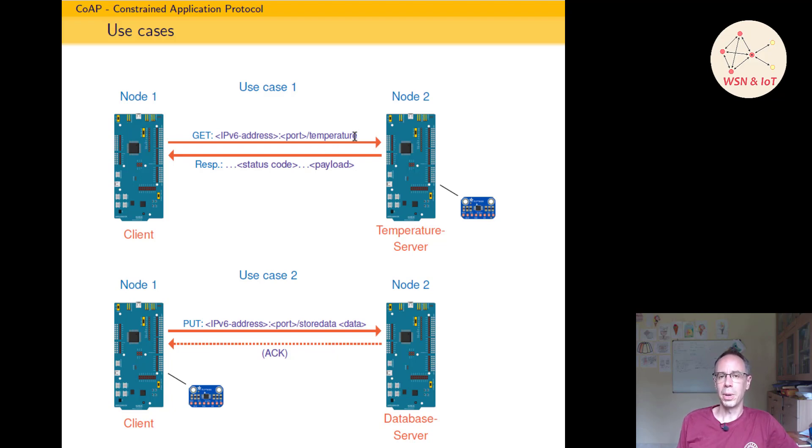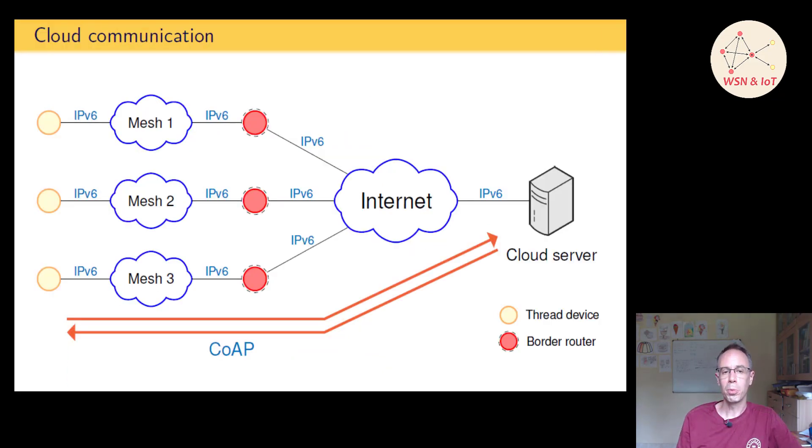There is a more suitable use case where one node acts as database server. This node is then always on, and our node with the sensor making a PUT request on the IP address, on the port, then on the resource store data, sending sensor data. And on node 2 the data will be stored or processed or whatever, and optionally it can send also acknowledgement if the data is really received.